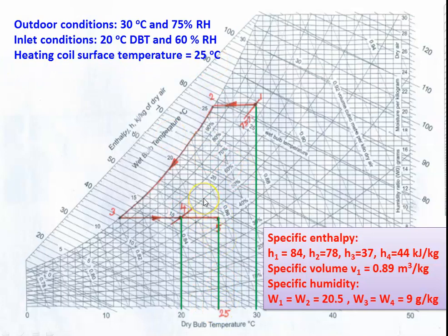As in the previous example, the final indoor condition is achieved by three processes: first by cooling, then dehumidification, and then by heating. Cooling reduces the temperature, dehumidification removes the water vapor, and heating increases the temperature. After locating the points, we read the enthalpy values.